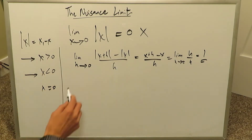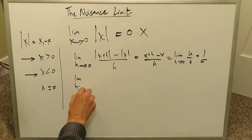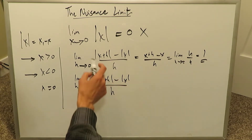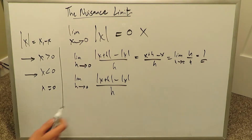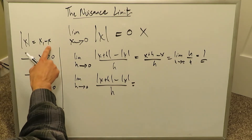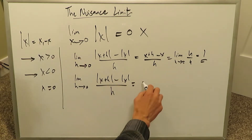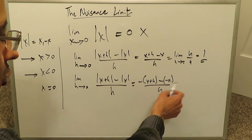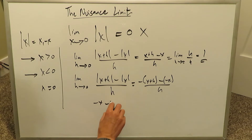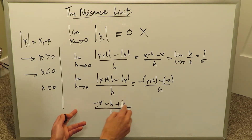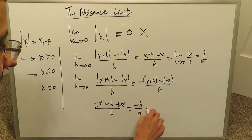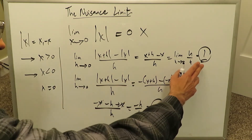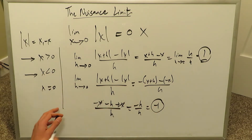Now for x values less than 0: limit as h approaches 0, we again apply the basic definition of the derivative to the absolute value function. Opening the parentheses, we focus on the second case — minus x. You get minus (x plus h) minus (minus x), all over h. Opening that up: minus x minus h plus x over h. The x's cancel, giving minus h over h, which simplifies to minus 1. So for x less than 0, we get a value of minus 1 — absolutely fine.